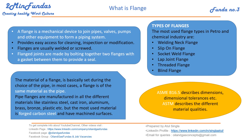A flange is a mechanical device used to join pipes, welds, pumps, and other equipment to form a piping system. It gives easy access for cleaning, inspection, and modification. Flanges are usually welded or screwed, and a flange joint is made by adding flanges along with a bolting system and a gasket in between, which helps in sealing the piping system.